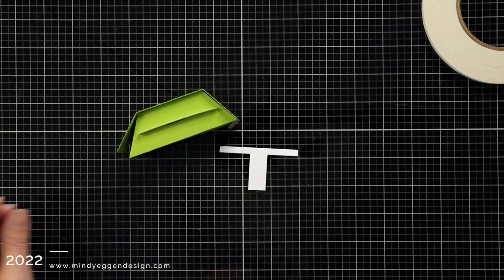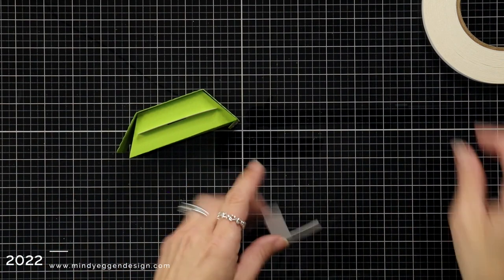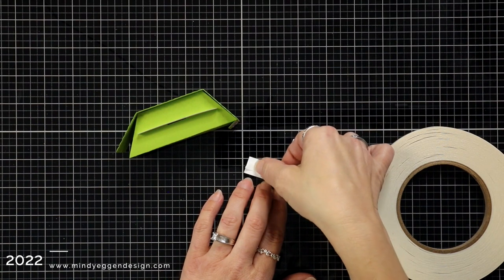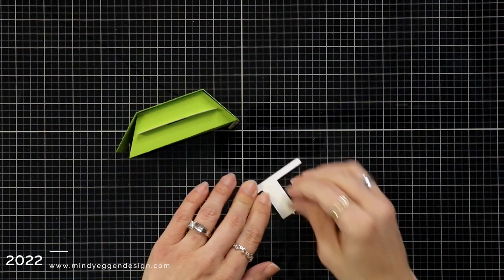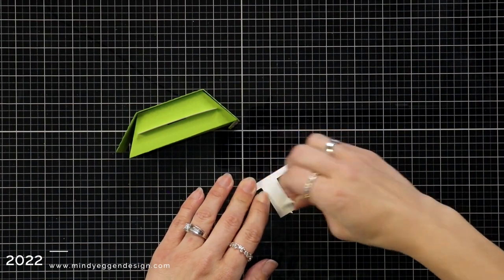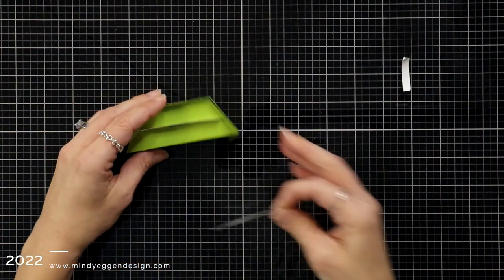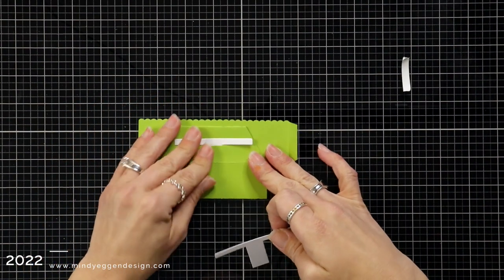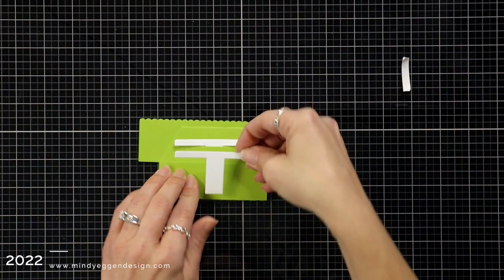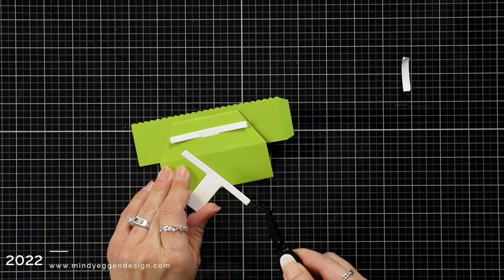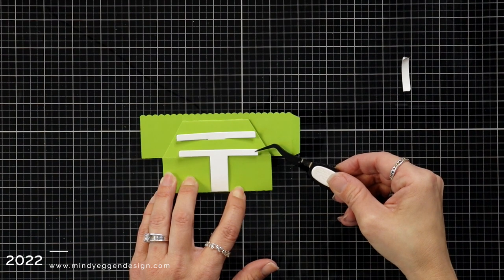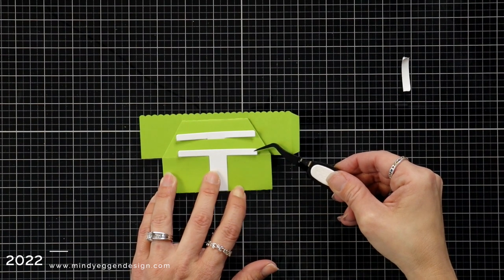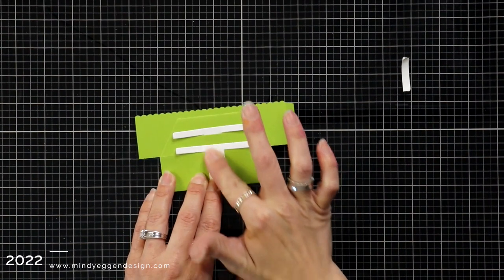This third T that we have, we just trim off where that score line is. We don't need that. This is going to be in the inside where no one's going to see it. Take that double-sided tape, run a strip up the center piece there, remove the backing. I like to use tweezers to keep my fingers out of the way. The T is going to line up right above that score line on our box and you want to eyeball it to make sure that your T's are lined up and pretty center. Once you have that in place, push down on that center piece and that's going to attach that third T into the center of our box.